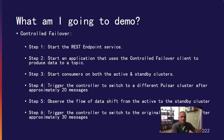For the controlled failover demo, I need to first start the REST endpoint service. Next, I will start an application that uses the controlled failover client to produce data to a topic. As before, I will start consumers on both the active and standby cluster windows to observe in real time where data is actually being published. Using the code shown earlier, we will trigger the controller to switch to a different Pulsar cluster after approximately 20 messages. We should observe the flow of data shift from the active to the standby cluster, and then after a total of 50 messages, the controller will trigger the flow back to the original active cluster — demonstrating that this is not a one-way operation.